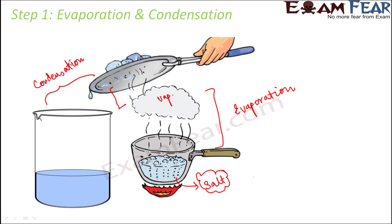So you see, we often make use of multiple separation processes together. To separate a mixture of sand and salt, we used sedimentation, decantation, and evaporation — a combination of two to three processes helped in separating the components.